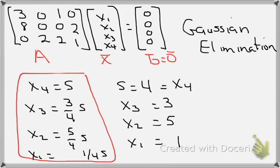I'm going to let x4 be equal to s. Then x3 becomes 3/4 s, x2 becomes 5/4 s, and x1 becomes 1/4 s.